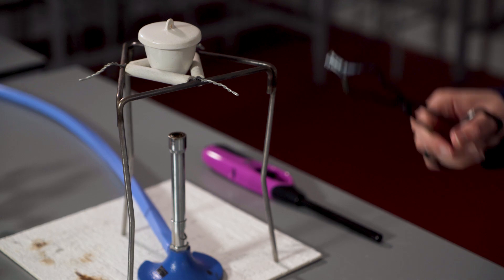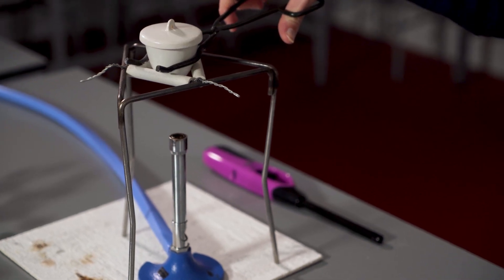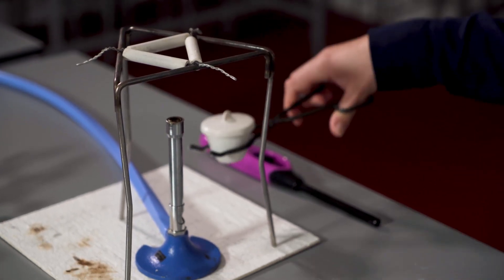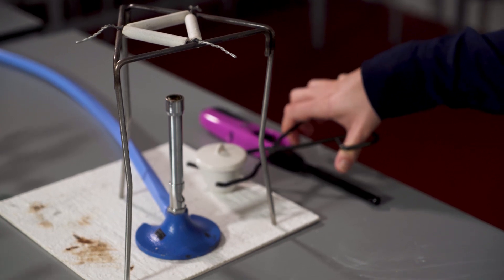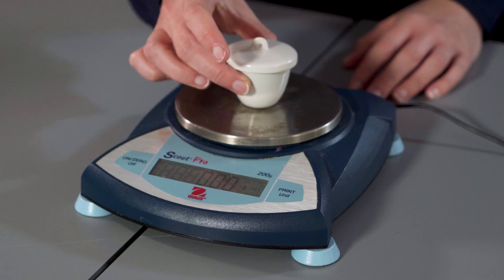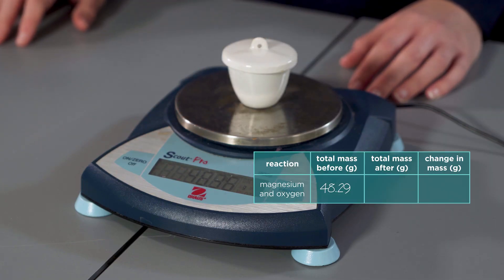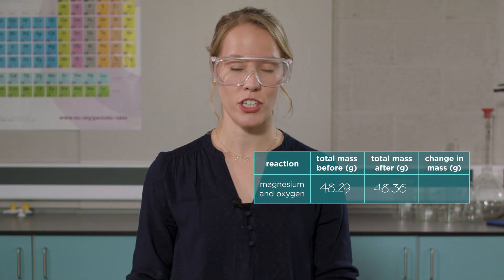You need to leave the crucible for a few minutes to cool before measuring the mass of the products. Remember not to remove the lid or you could lose some of the fine white powder and this will affect the final mass. Once the crucible has cooled, we can transfer the crucible to the mass balance complete with lid and contents, then record the final mass: 48.36. We will calculate the change in mass after we've completed the second experiment so that we can compare the two.